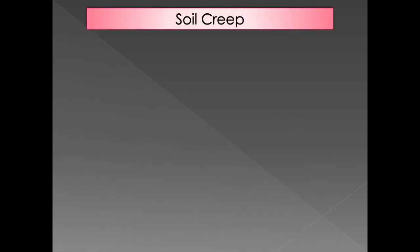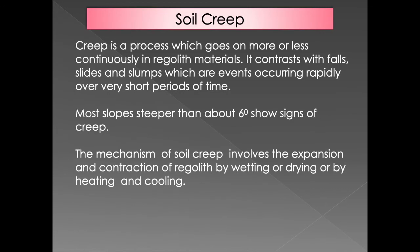One of the most common forms of mass wasting is soil creep. Soil creep is a process that goes on continuously within the soil materials — the regolith. It consists of falls, slides, and slumps which eventually cause the soil to move. It can occur over very short periods of time. Soil creep can occur on a slope that is as low as six degrees.